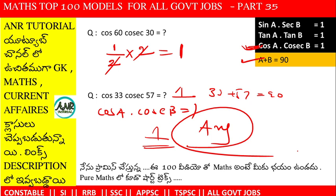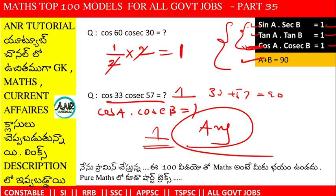So if you have these 3 formulas, you can solve problems in the 35th model. The key condition is a plus b equals 90 degrees. With these 3 formulas, you can solve problems in this model and the next videos will cover the next models. All the best.